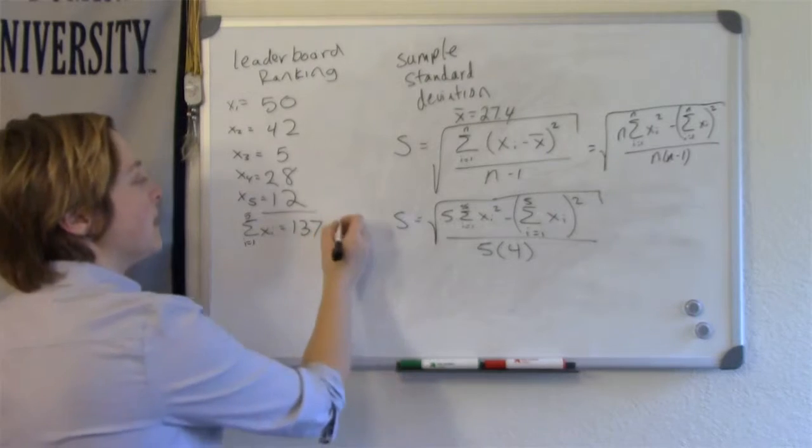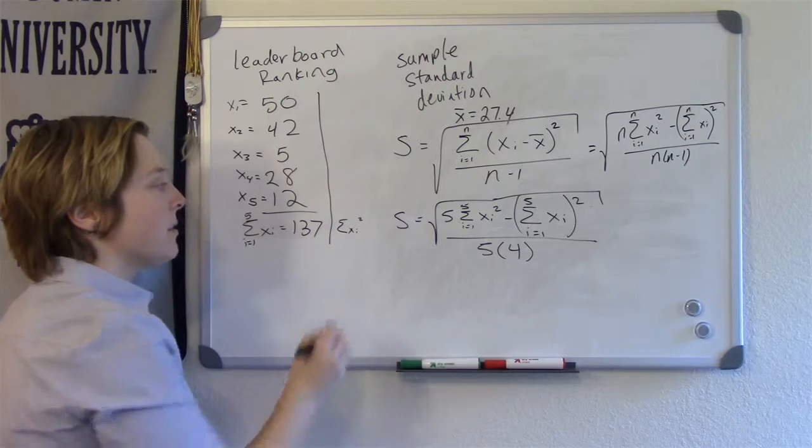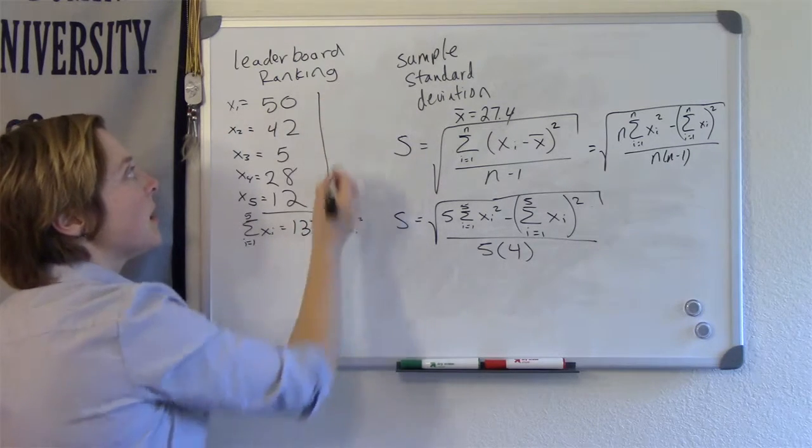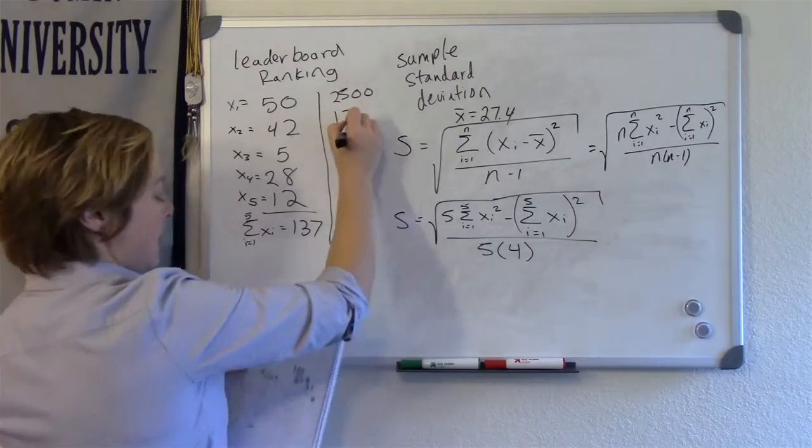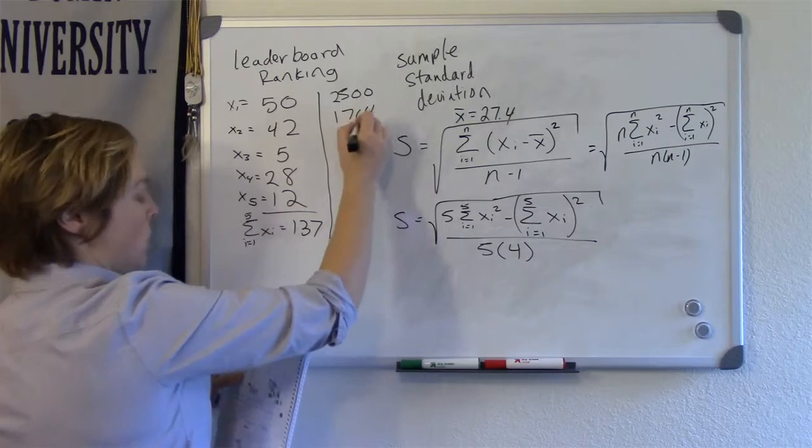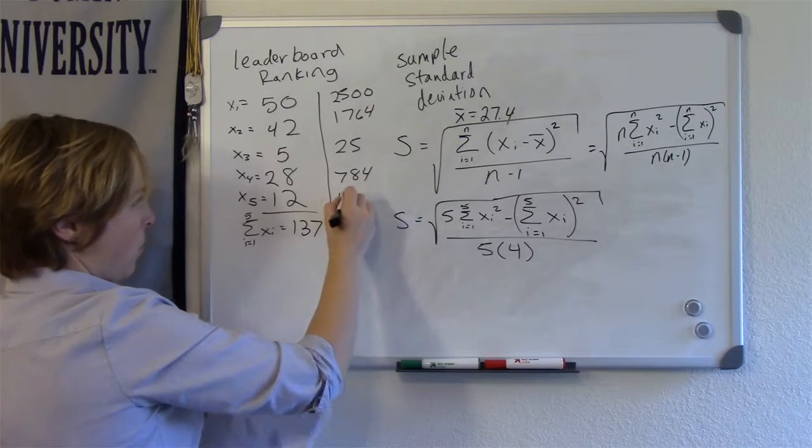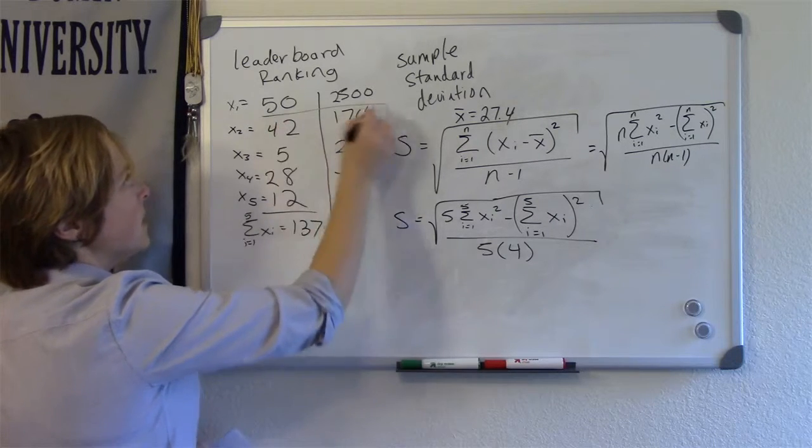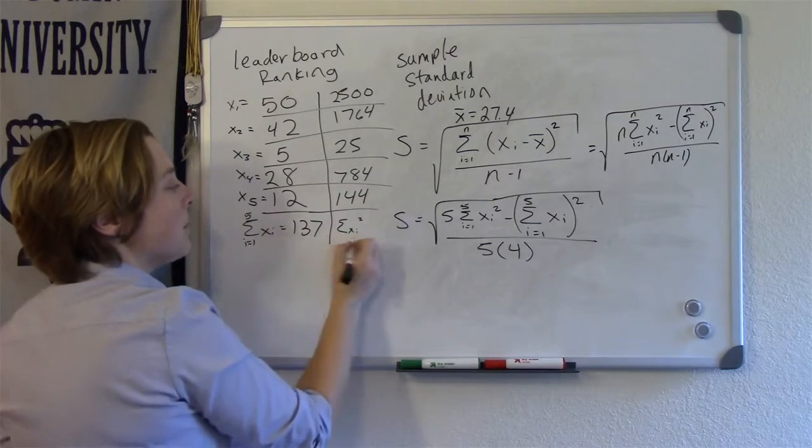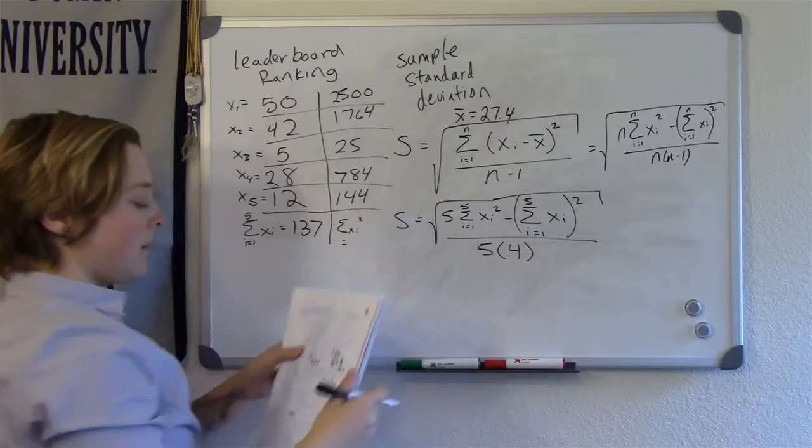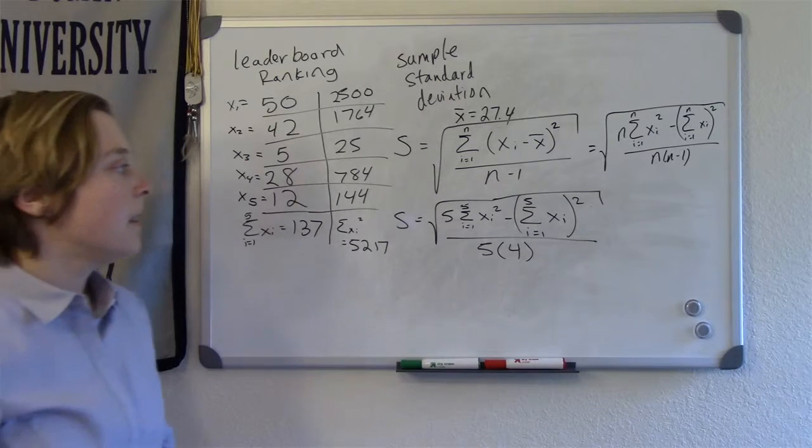So then I need to know what is the sum of the square observations, the sum of the squares. So I want to go ahead and square each of these. So this one would be 2,500. This one would be 1764, 25, 784, 144. So what I'm doing is I'm squaring each of my data observations. So the sum of the squares is 5,217.